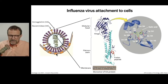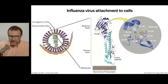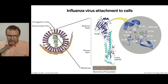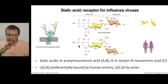By the way, this diagram is from Principles of Virology, and I don't think it's a good diagram. The interaction of HA with the receptor is shown as the HA binding into a cavity, but that's not right — it's the HA that has the cavity and the sialic acid fits in. That has to be fixed in the next edition. Sialic acid is the receptor for flu, but there are some important differences to explore.